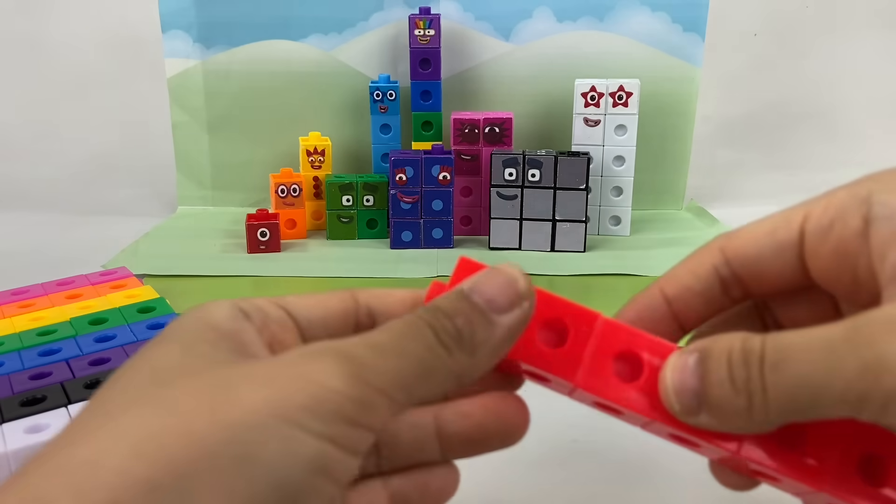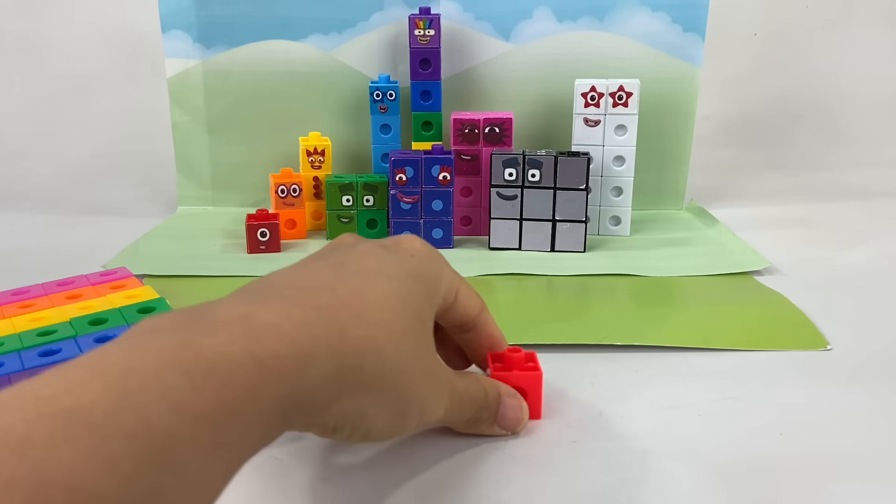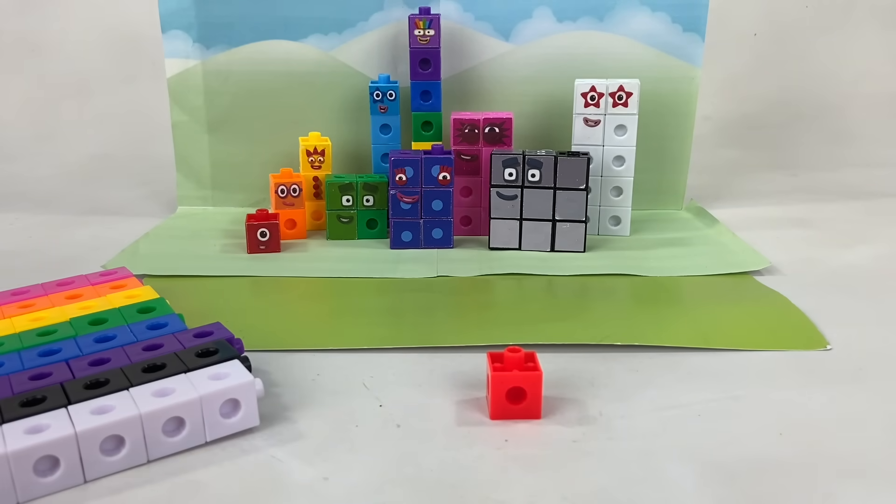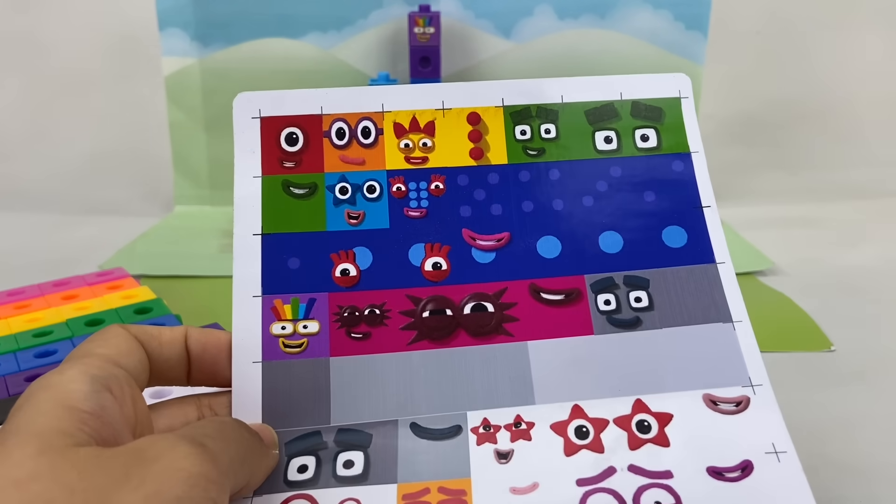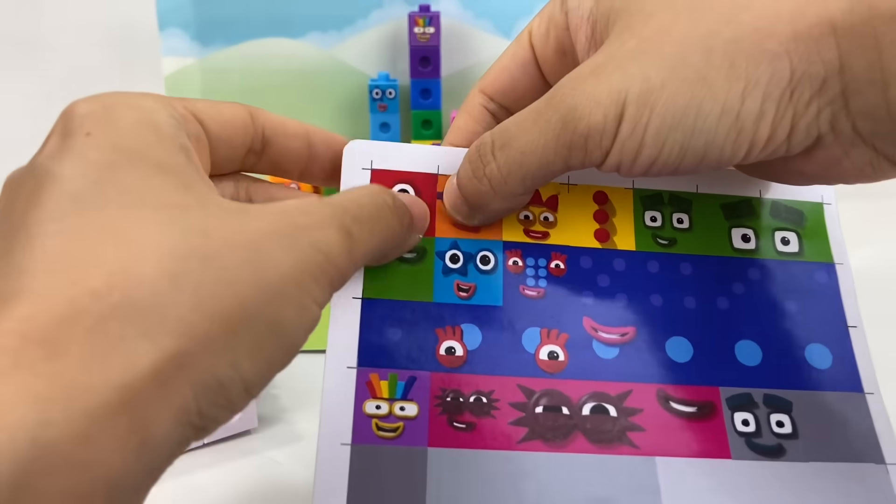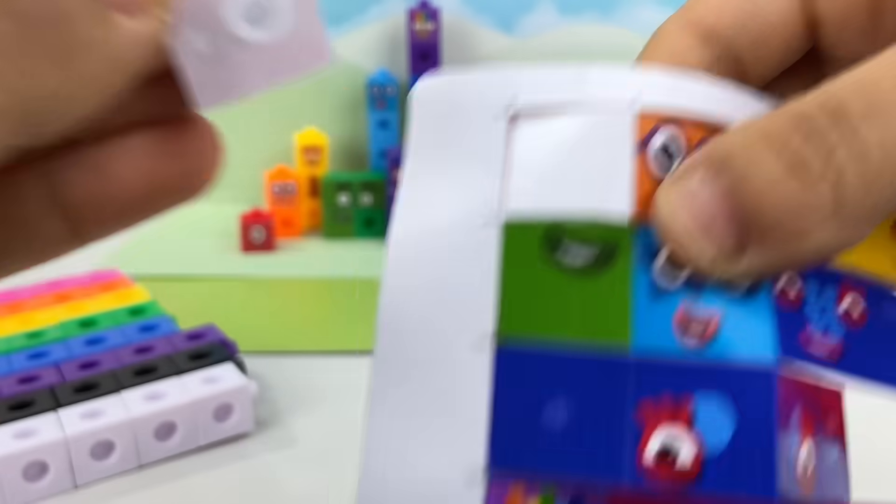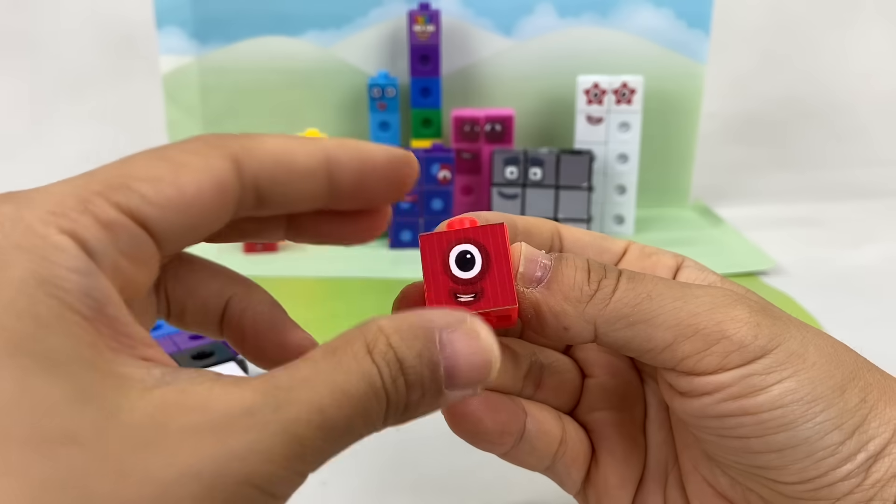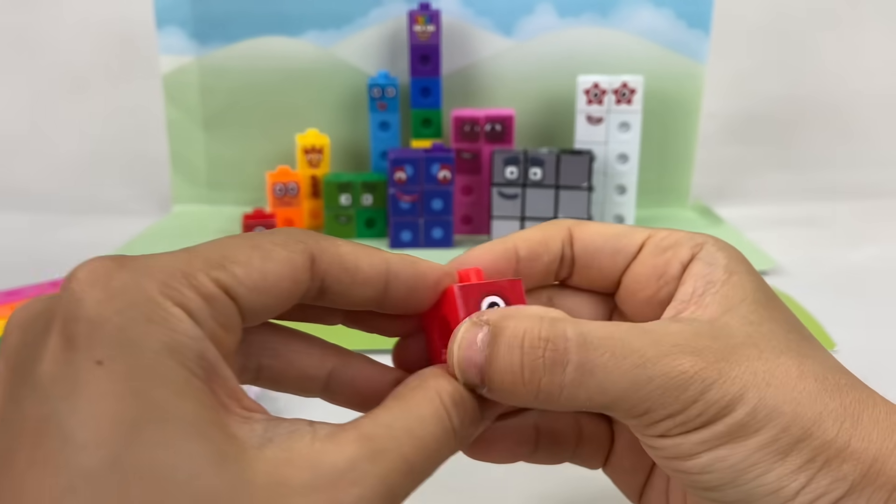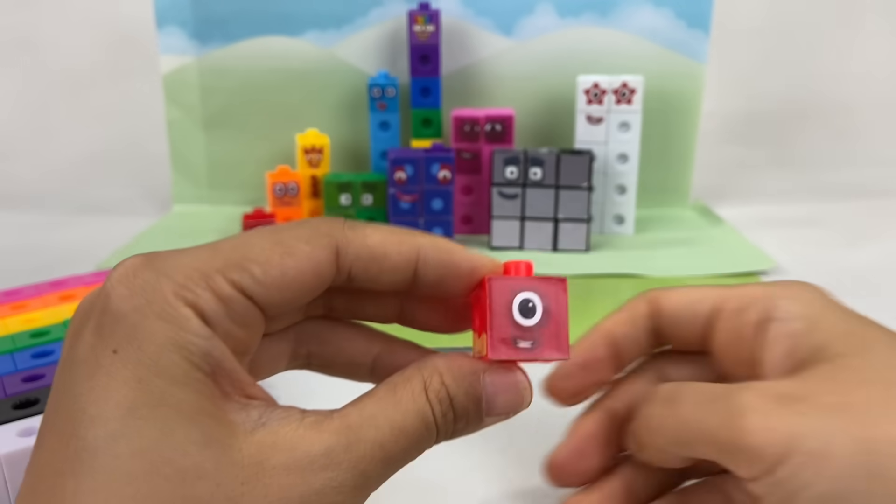Let's begin with the first ever Numberblock in Numberland, Numberblock 1. She's made up of one red block. Then you can make stickers for their faces. Numberblock 1 has one big round eye. And her favorite color is red, of course. There she is! Numberblock 1!